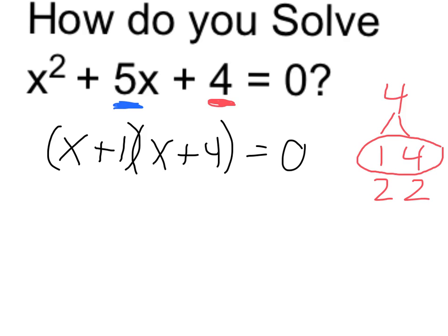My zero product property tells me that either the first thing is equal to 0 or the second thing is equal to 0. If two things multiplied together equal 0, one or the other of them must equal 0.